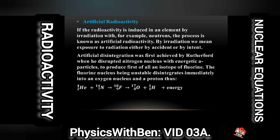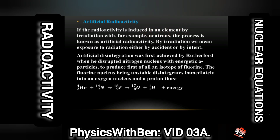Next up we want to look at artificial radioactivity. If radioactivity is induced in an element by irradiation with, for example, neutrons, the process is known as artificial radioactivity.